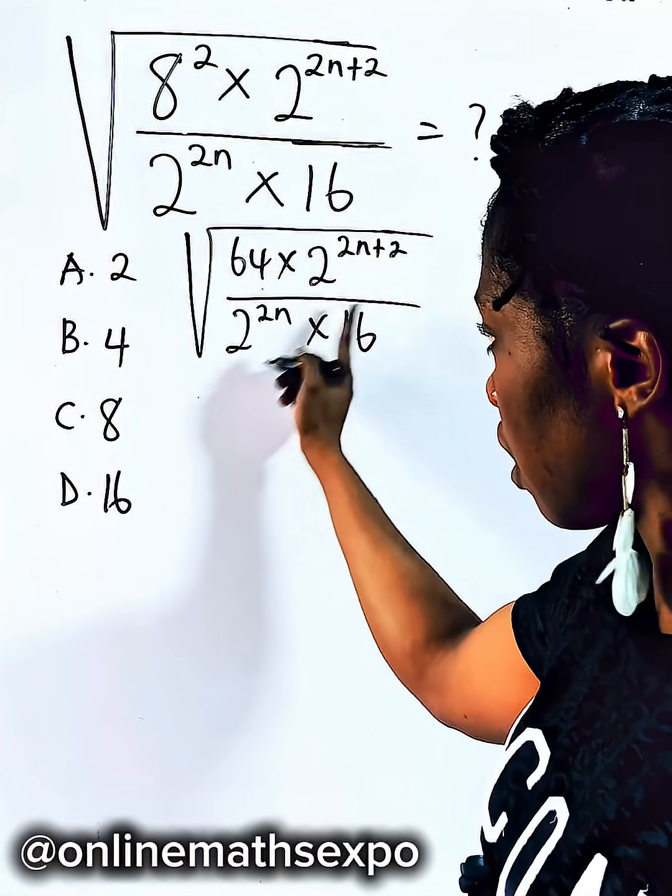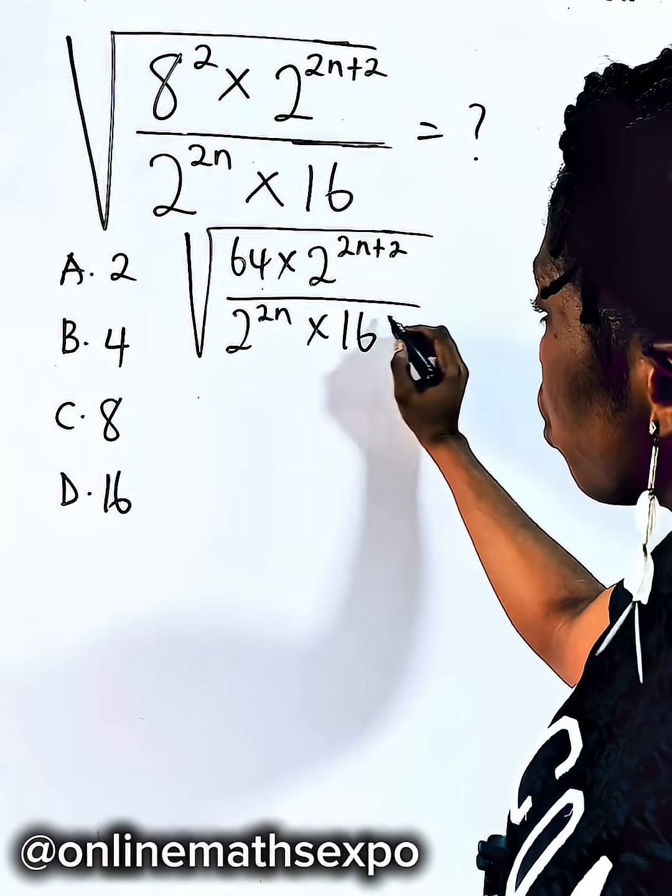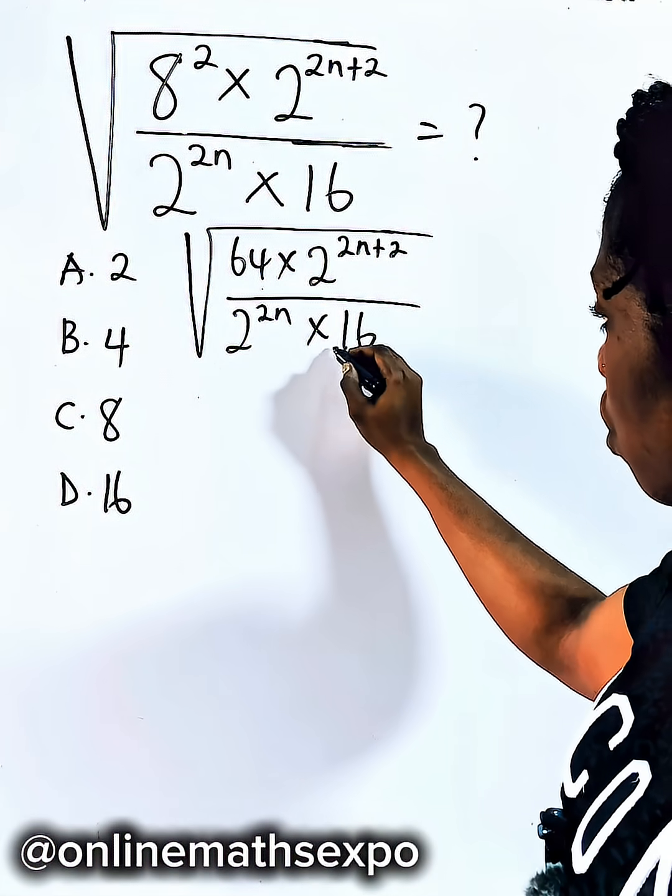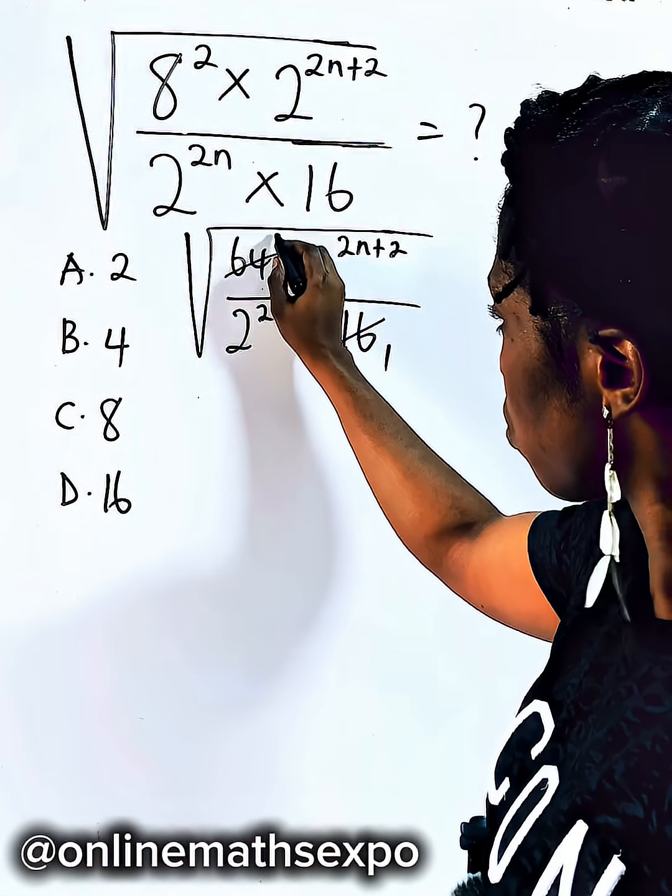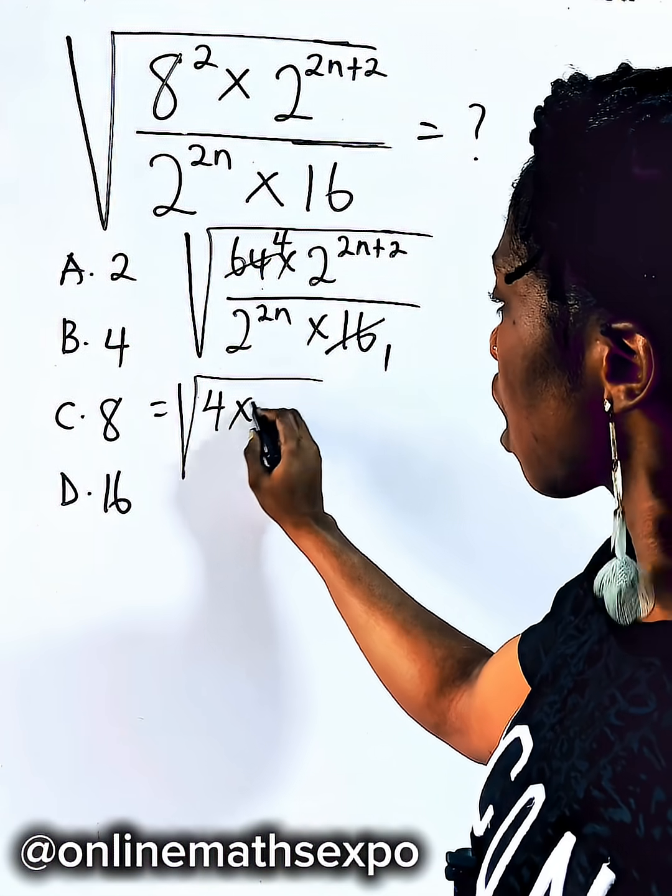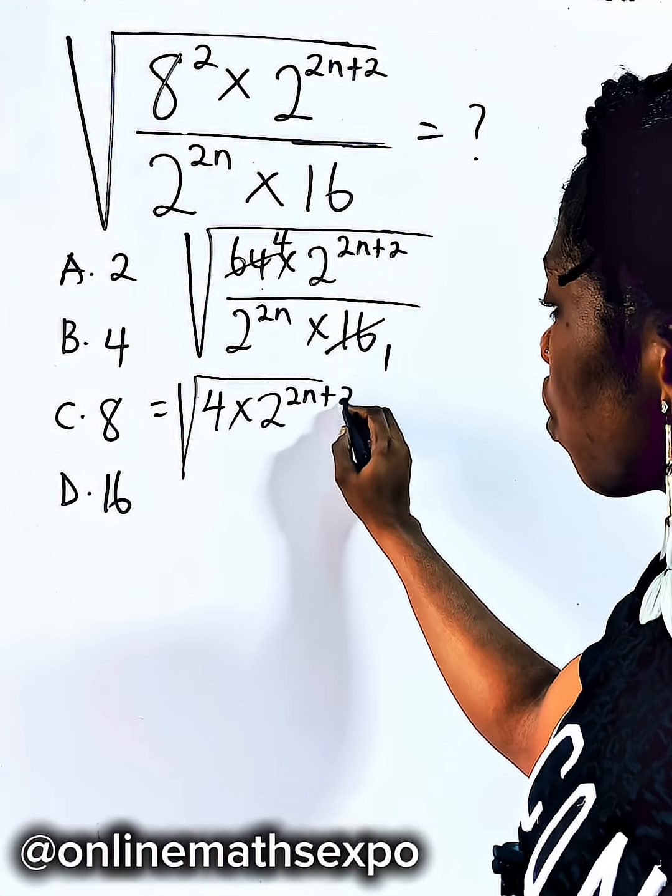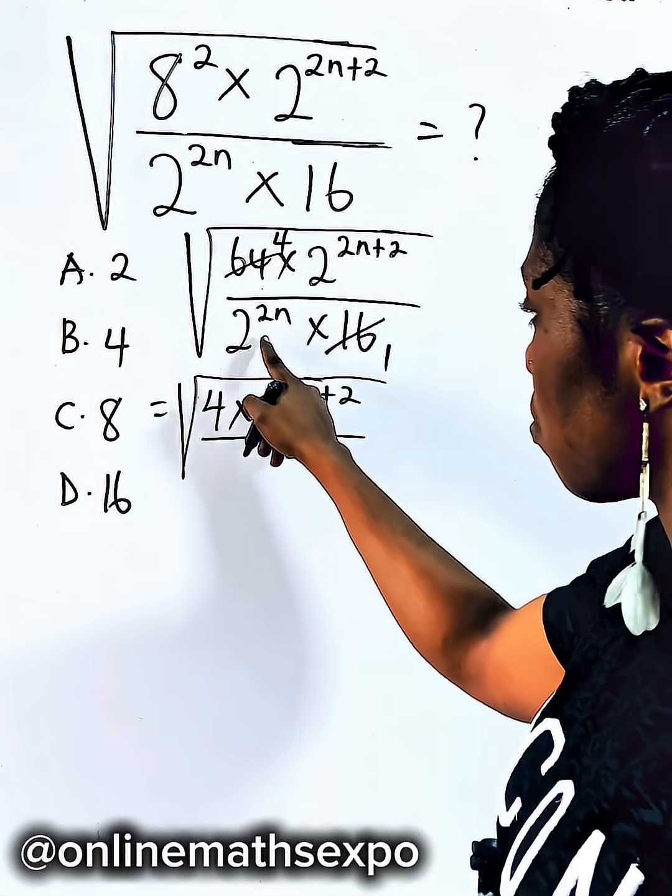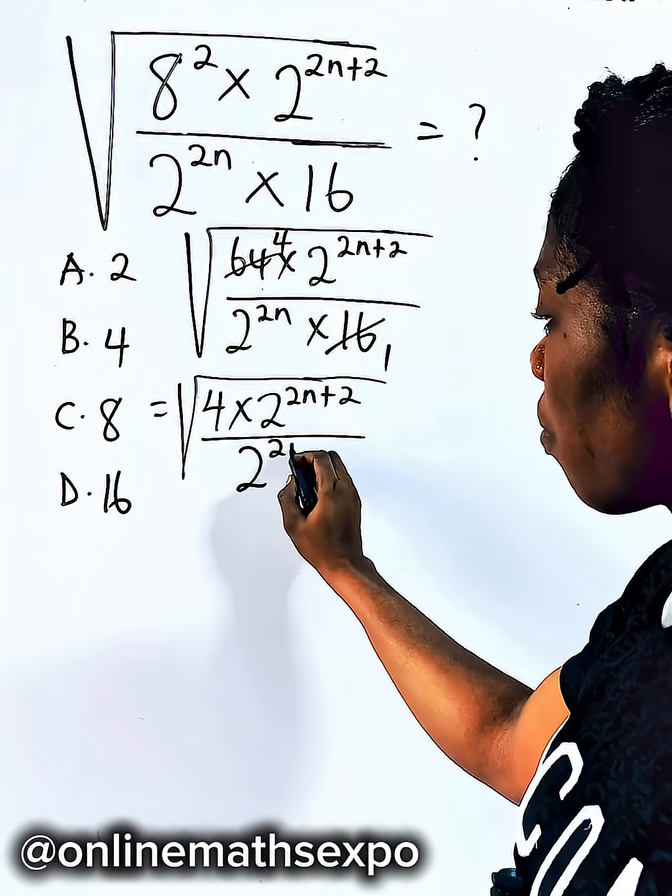These two are multiplying just like these two. So you're free to use the numbers to divide. So this will divide 1, this will divide 4. So we have square root of 4 times 2 to the power of 2n plus 2 is divided, multiply this, it gives you 2 to the power of 2n.